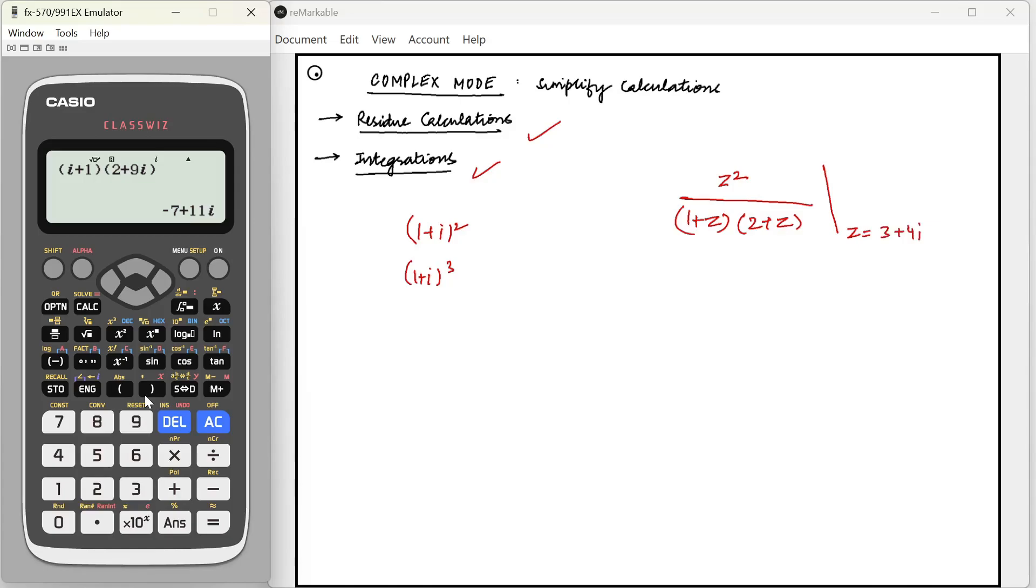For this also we can do something. We can first write three plus four i and store that in a variable. I'll press STO and then this button for A, so now A has three plus four i.